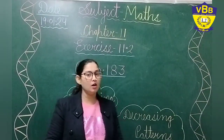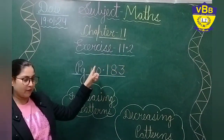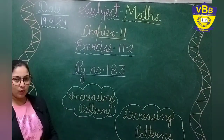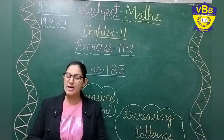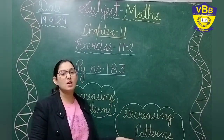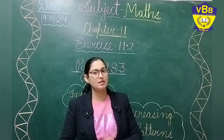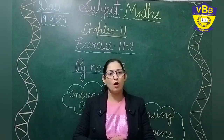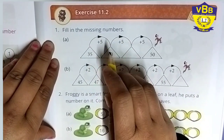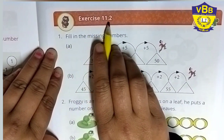What is the exercise number? Look here — Exercise 11.2, given on page number 183. Today we are going to do the book exercise related with increasing patterns and decreasing patterns. All of you take out your books and get ready with the pencil and eraser. We are moving on to the book exercise. Hope you all have opened page number 183 and Exercise 11.2.